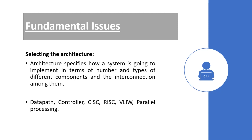Similarly, if you chose a data flow graph model in the first stage, you may go for a data path architecture in the second stage. In the data flow graph model, the output is generated as a result of a set of predefined computations, and because of that, data path architecture is best suited for it. In later videos we will discuss these models in detail to understand which architecture suits which model better.